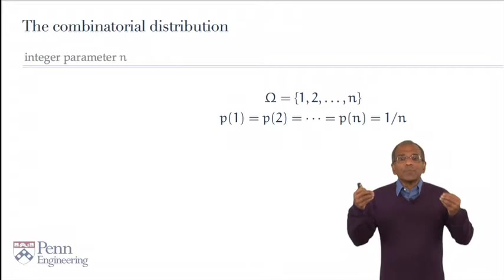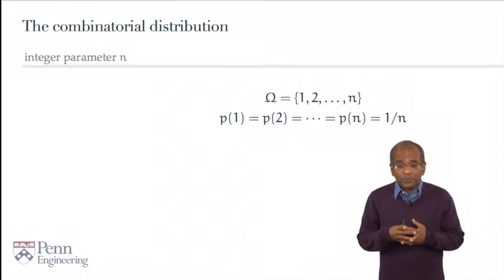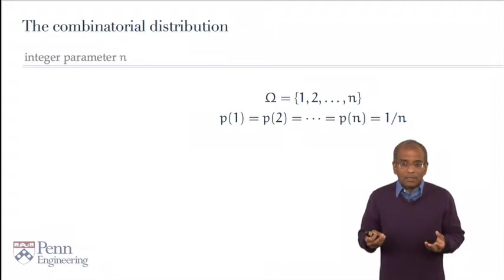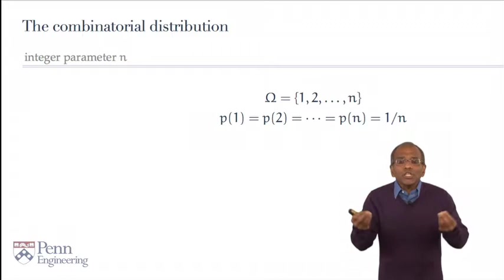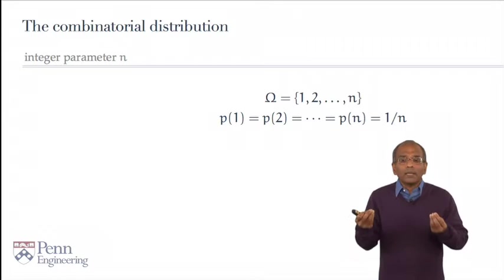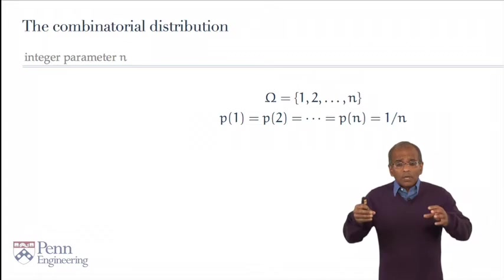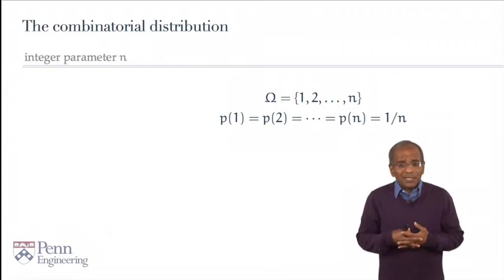We start with an integer parameter n, fixed but arbitrary, 3, 5, 10, 100, a million, what have you. The sample space corresponds to the integers from 1 through n. For example, if n were 6, this could be the sample space corresponding to the throw of a die. We consider the following allocation of atomic probabilities to the sample points 1 through n. Allocate to each p(k), for k running from 1 through n, equal value 1 over n. Now, when I posit that this is an honest mass function, then I am saying in fact that the axioms of probability are in fact satisfied. Are they? We should very quickly test this out.